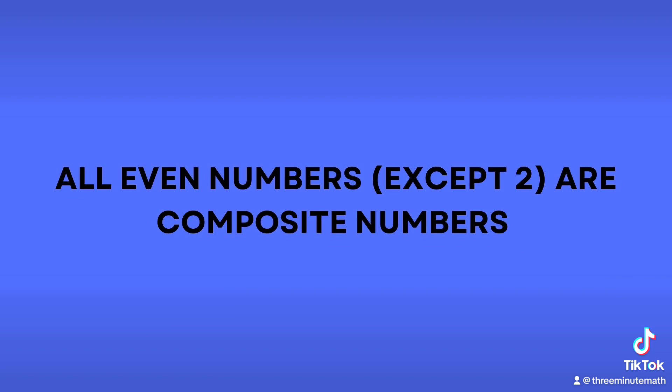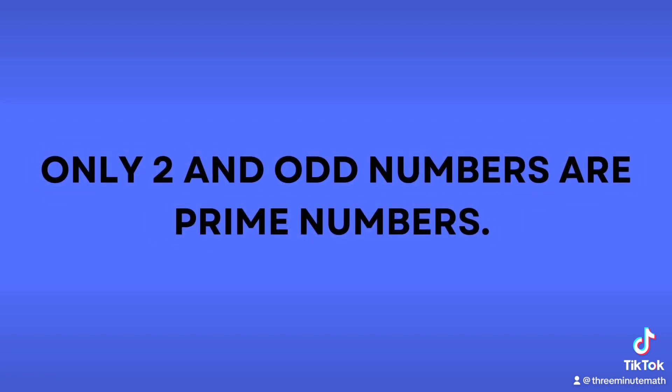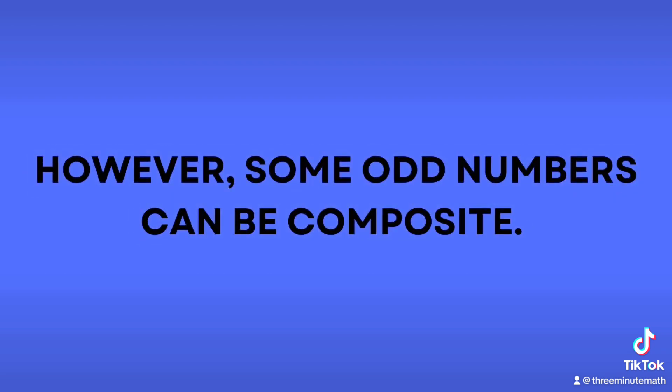Here are some generalizations about prime and composite numbers. All even numbers, except 2, are composite numbers. Only 2 and odd numbers are prime numbers, but some odd numbers can be composite.